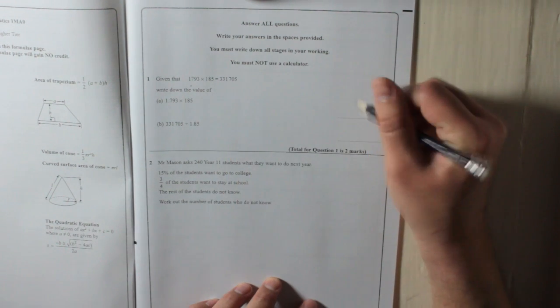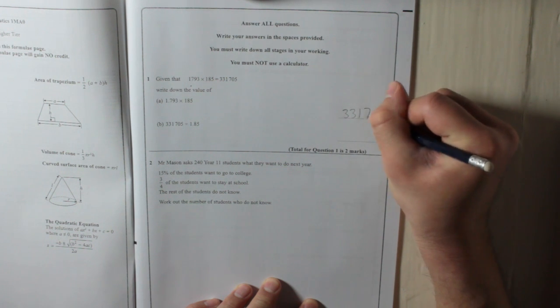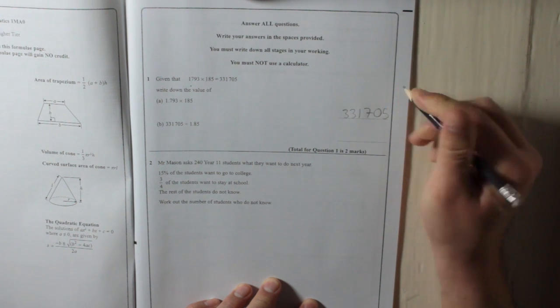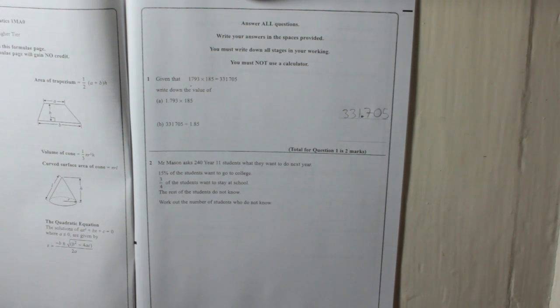That is going to be, I'll write it in. 331,705 divided by 1,000. 1, 2, 3. 331.705.